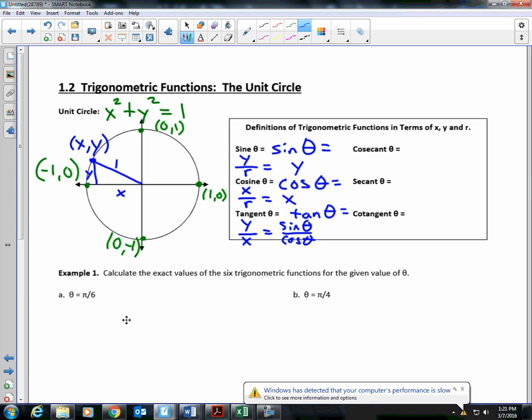What is y equal to that we already wrote down? Sine, right? Y is sine. Over x. So tangent is the same as sine over cosine. Then we have the reciprocal functions. Once you know these three, the rest are easy.